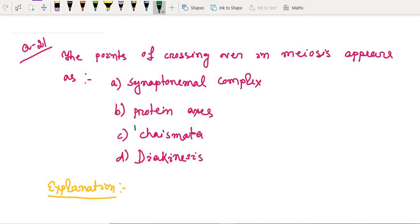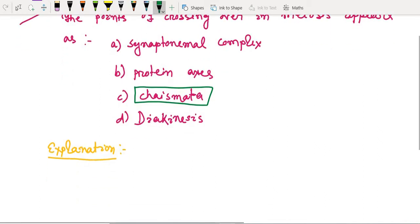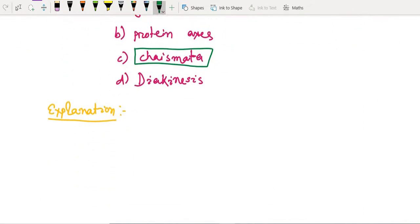Right option is chiasmata. Chiasmata is the point where the crossing over occurs. Here the chromatids are crossed over and form new combination.